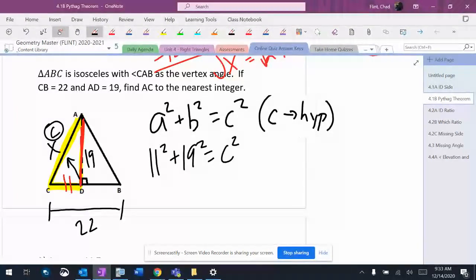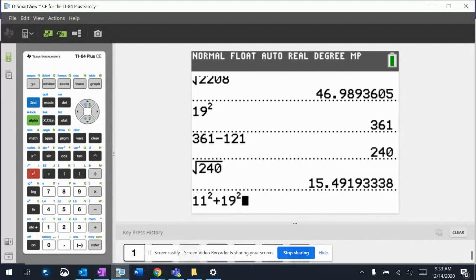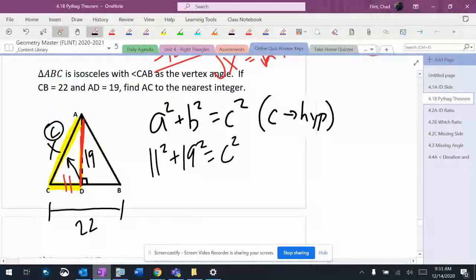So the A and the B doesn't matter what spots they go in as long as you have the hypotenuse in the right spot. The correct algebra, so 11 squared plus 19 squared, which is 482.